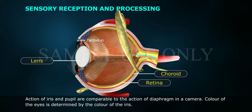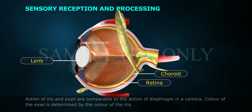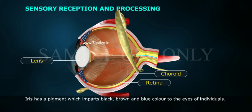The action of the iris and pupil is comparable to the action of a diaphragm in a camera. The color of the eye is determined by the color of the iris. The iris has a pigment which imparts black, brown, and blue color to the eyes of individuals.